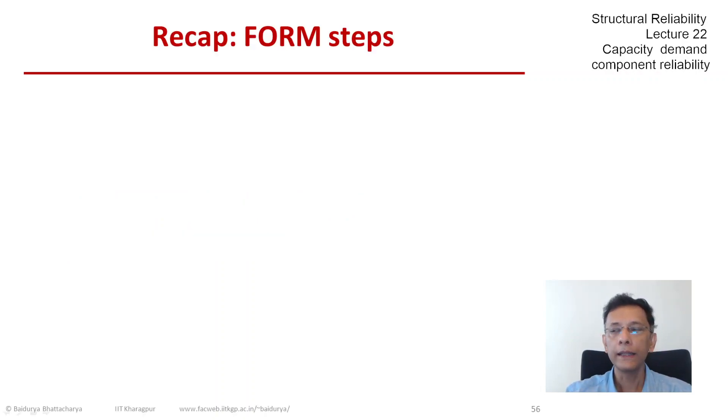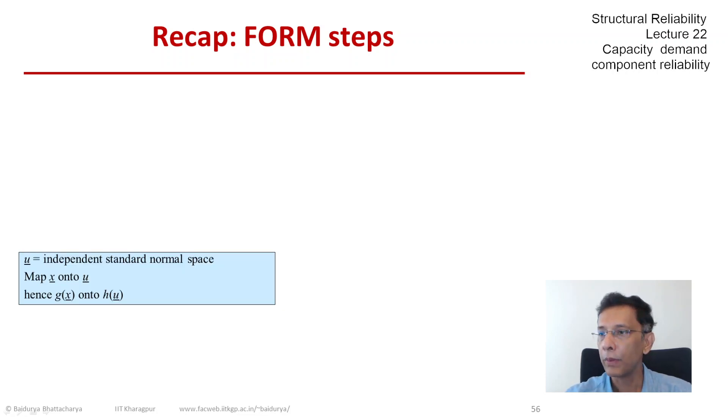So let's recap the essential features of FORM. We start by mapping the basic variables onto the independent standard normal space, x to u, and hence we get a new limit state equation g(x) equals 0 to h(u) equals 0.